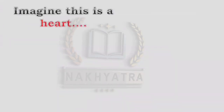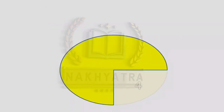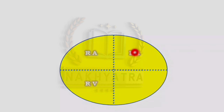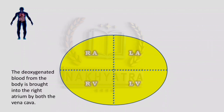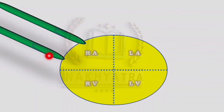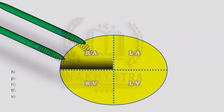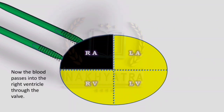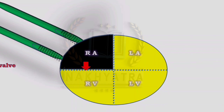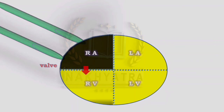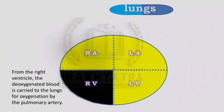Now let us study the working of the heart. The heart has four parts: right atrium, right ventricle, left atrium, and left ventricle. Deoxygenated blood from the body is brought into the right atrium by both venae cavae. Then the blood from the right atrium passes into the right ventricle through the valve.